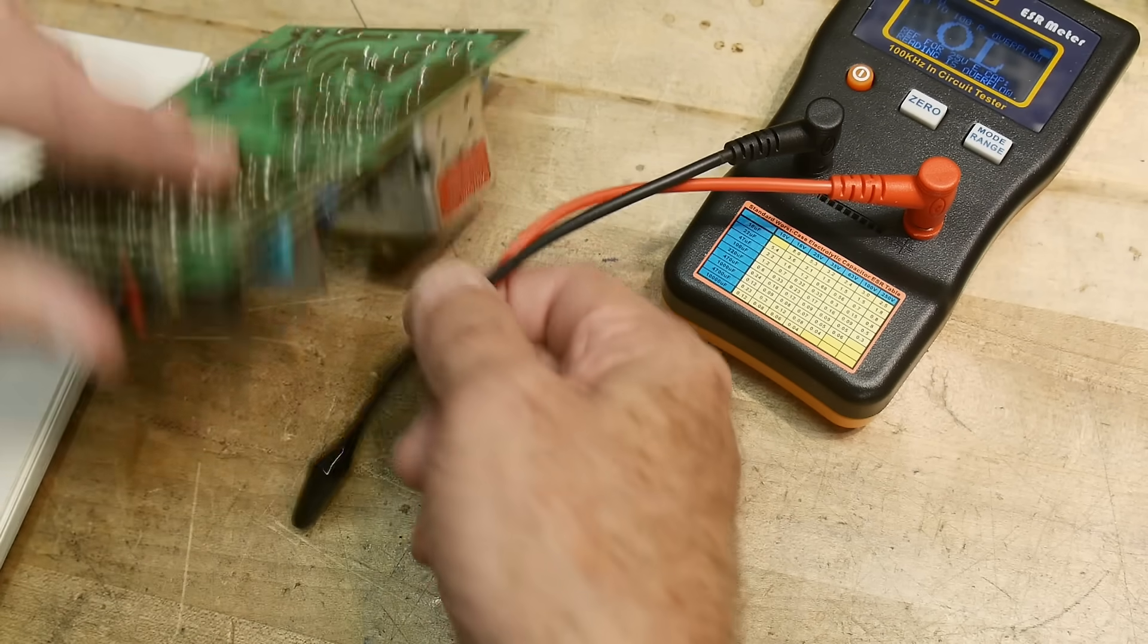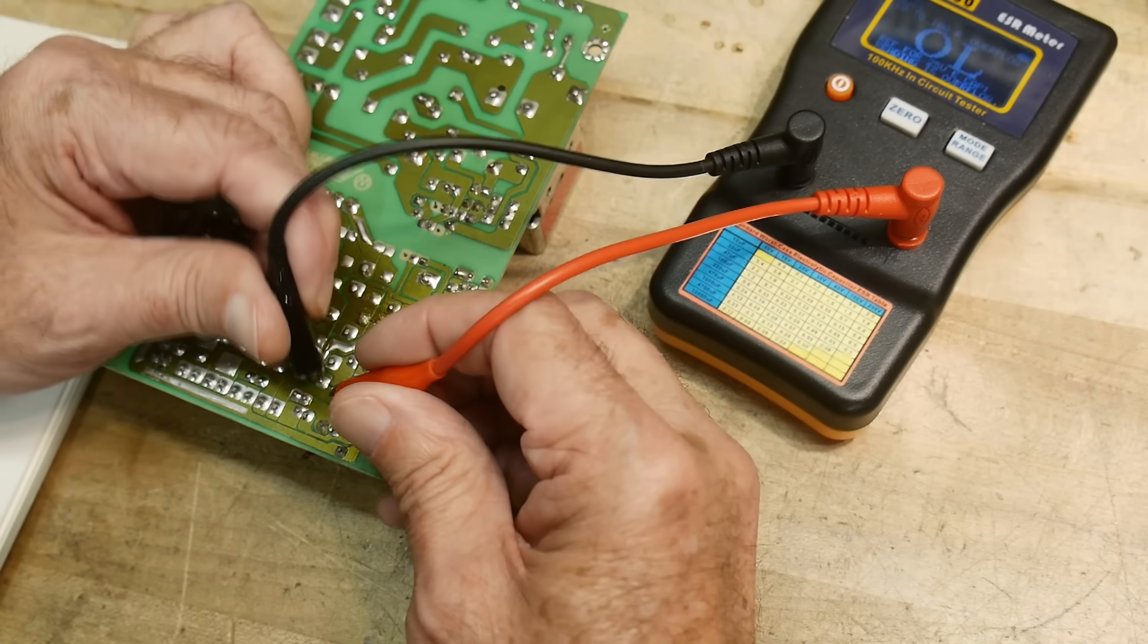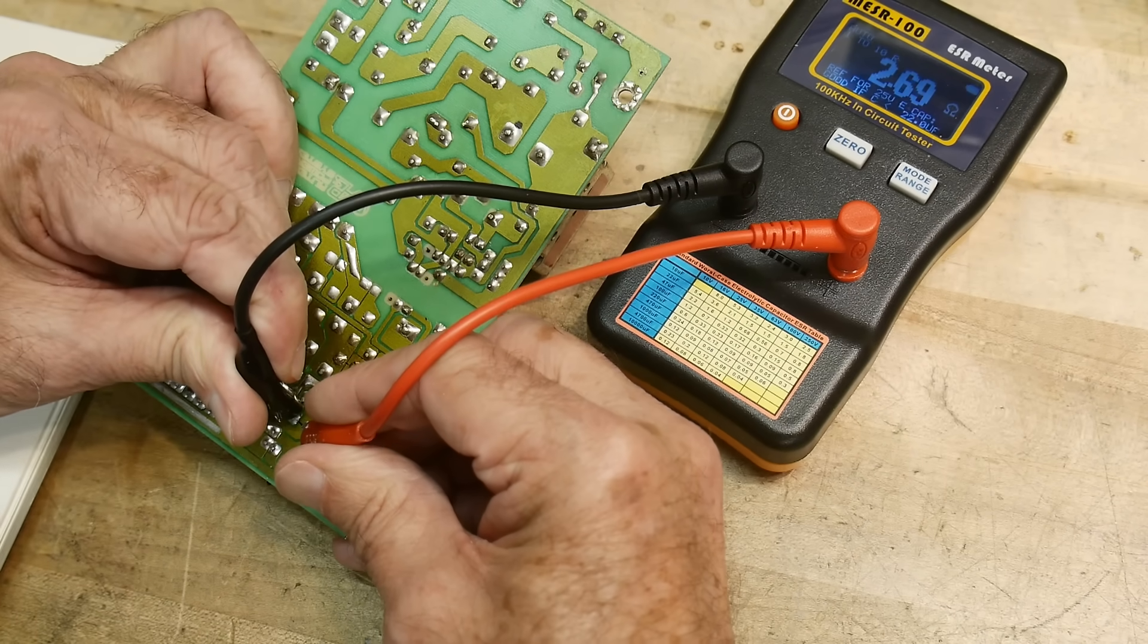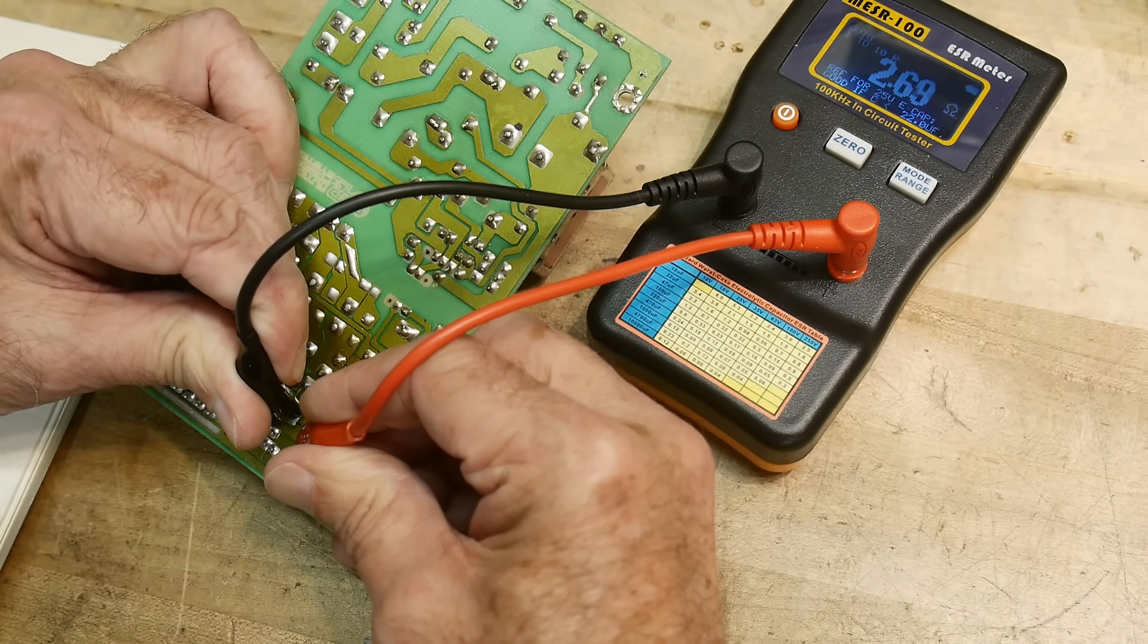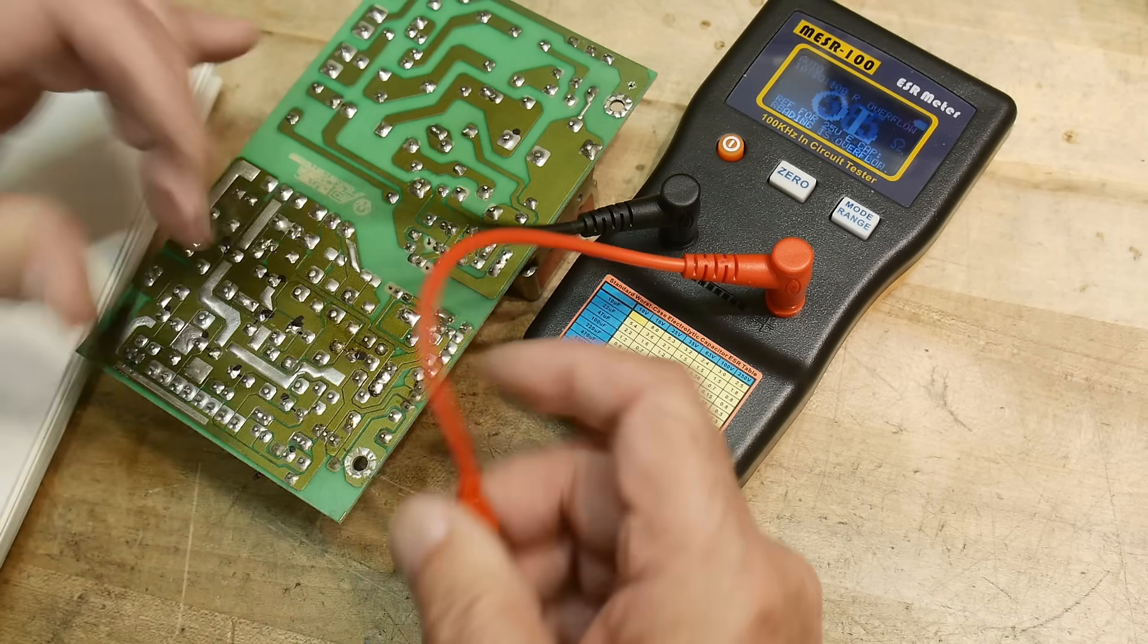Alright, and let's measure this one up here. Measure him. Oh no, 2.7 ohms. Okay, can you see that on camera? 2.7 ohms.